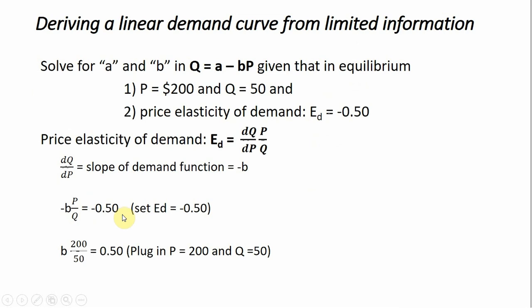The next step is to do some substitution here. We're going to substitute in for P, we're going to put in $200, and for Q we're going to plug in 50. Again, that's information that you would have to start this problem, what's going on in equilibrium.